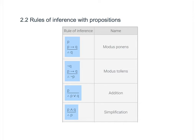Now we look at named rules of inference — famous valid argument forms you can use whenever needed. These can be verified by constructing a truth table and confirming there is no critical row with a false conclusion. The first is modus ponens: if p is true and 'if p then q' is true, therefore q must be true. It has two hypotheses, p and p→q, and one conclusion q. The second is modus tollens: from 'not q' and 'if p then q,' the conclusion is 'not p.'